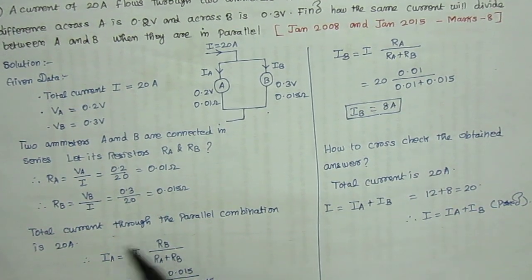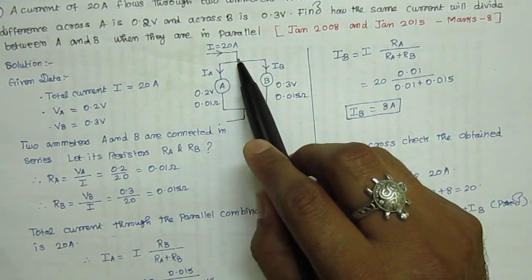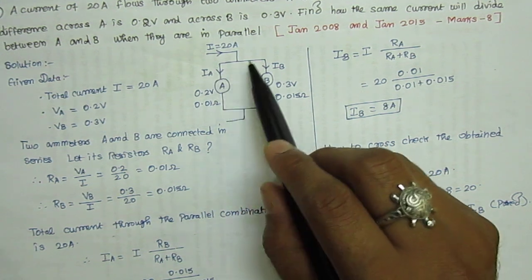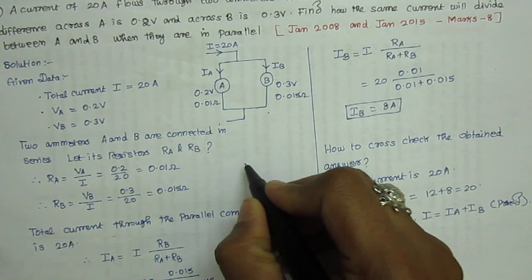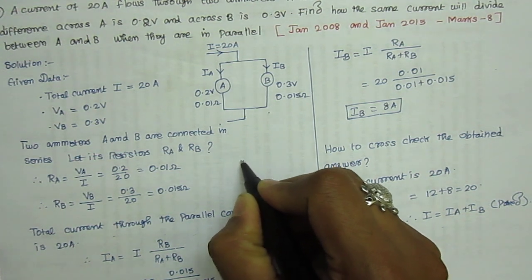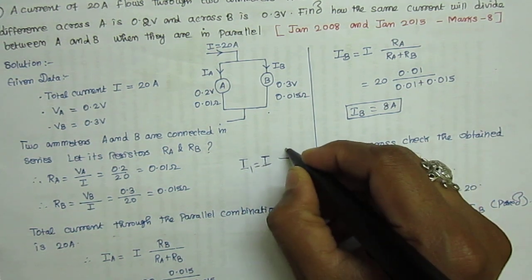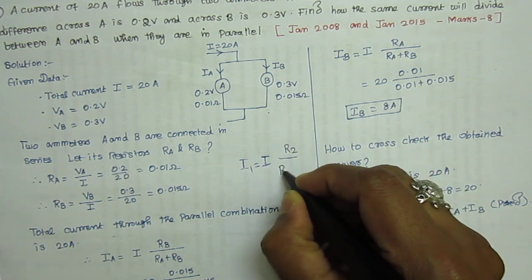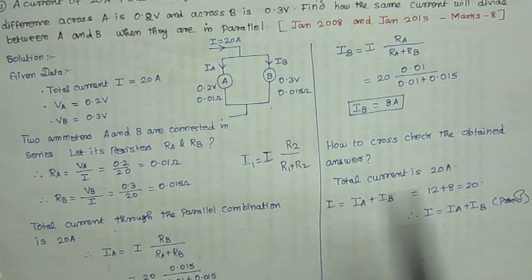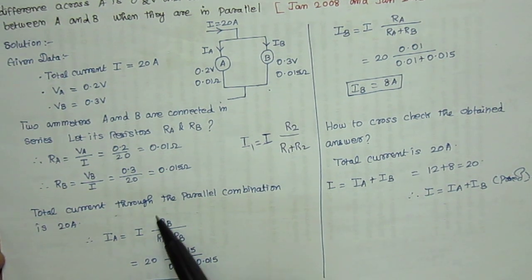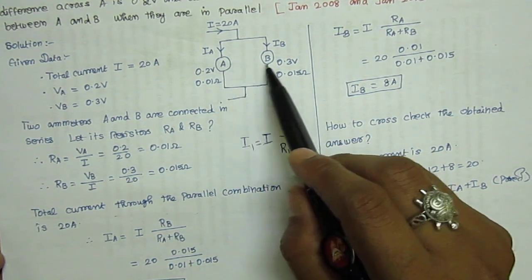Now, the total current through the parallel combination is 20 amps. It is divided into two branch currents, I_A and I_B, when connected in parallel. Using the current divider rule formula: I1 = total current × opposite resistance / total resistance. According to our circuit diagram, we rearrange: I_A = I × R_B / (R_A + R_B), where R_B is the opposite resistance for ammeter A.